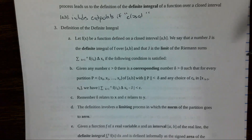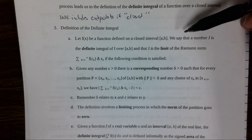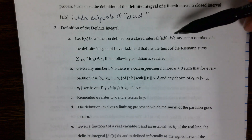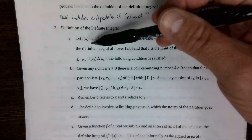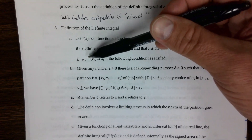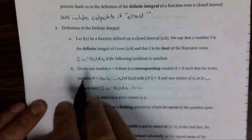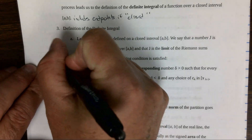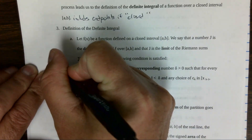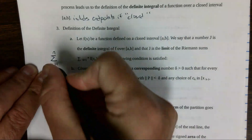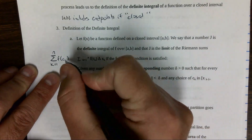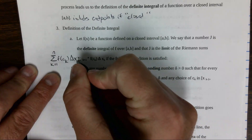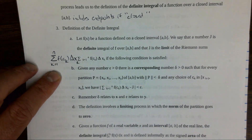Here is the formal definition: Let f be a function defined on the closed interval. We say a number J is the definite integral over [a, b], and J is the limit of the Riemann sums — the summation from k equals 1 to n of the function evaluated at c_k. So you have your summation with your function — they use c for the sample point, which is a bit unusual, but that's from the book.